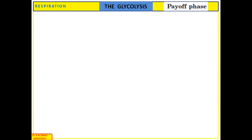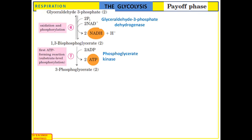During the payoff phase, glyceraldehyde-3-phosphate participates in further reactions of glycolysis. This glyceraldehyde-3-phosphate undergoes oxidative phosphorylation to form 1,3-bisphosphoglycerate. Here, the aldehyde group is oxidized to form an acid. Reaction number 6 is called the oxidation and phosphorylation reaction, and it is carried out by glyceraldehyde-3-phosphate dehydrogenase.